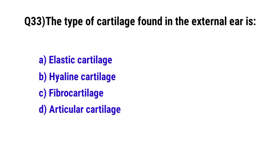Question number thirty-three: The type of cartilage found in the external ear. The correct option is A, elastic cartilage.